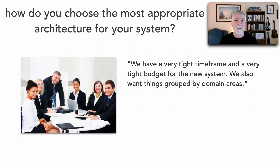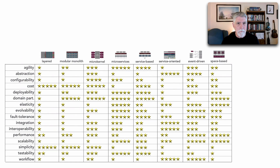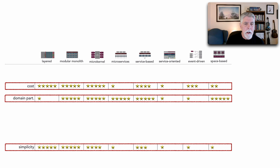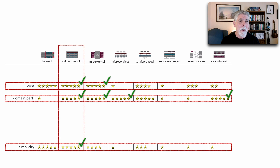Let me show you another scenario. The business says: we have a very tight timeframe and a very tight budget for the new system. We also want things grouped by domain areas, since we're focusing on domains and we're going to undergo domain driven design — DDD. So we convert that over to architecture characteristics and go over to our star ratings. We realize the ones that are important to us are cost and simplicity, and also domain partitioning. With cost and simplicity, modular monolith seems like a pretty good choice that matches those business needs.